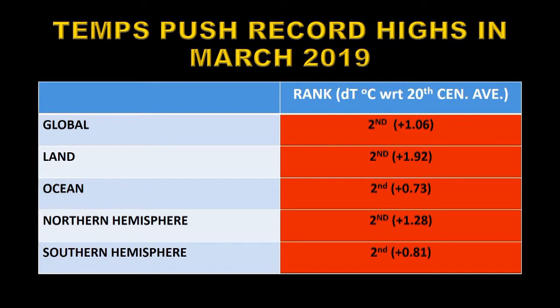Looking at the land and ocean separately, the land was 1.92 degrees centigrade above the 20th century average and the ocean was 0.73 degrees centigrade above the 20th century average. The northern hemisphere was second again at plus 1.28 degrees centigrade above the 20th century average and the southern hemisphere at plus 0.81 degrees centigrade above the 20th century average.